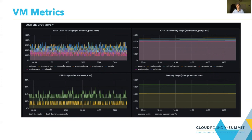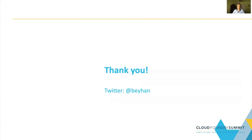We also recommend having VM metrics, which will help you with issues around resource utilization by BOSH DNS. We have had issues in the past where BOSH DNS used too much CPU, and having those metrics can really help you. Thank you for your time. If you want to reach me, here is my Twitter handle and I am happy to hear your questions.